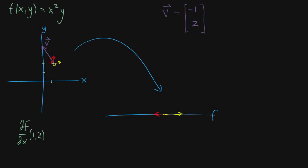The directional derivative is similar. You're not thinking of the actual vector taking a full step, but you'd be thinking of taking a step along h multiplied by that vector, where h represents some really small number — maybe 0.001. When doing this formally, you'd just be thinking of the limit as h goes to zero. So the directional derivative is saying: when you take a slight nudge in the direction of that vector, what is the resulting change to the output?